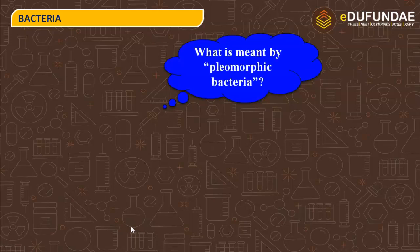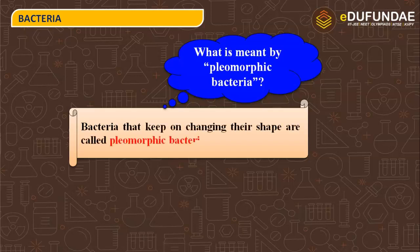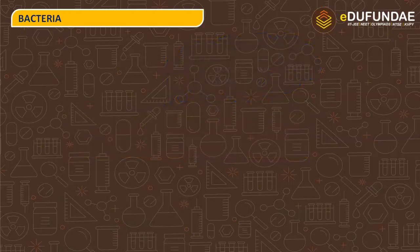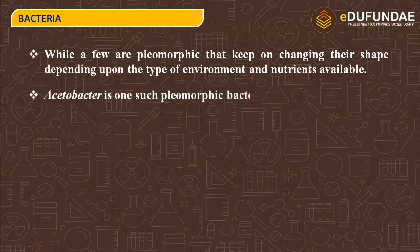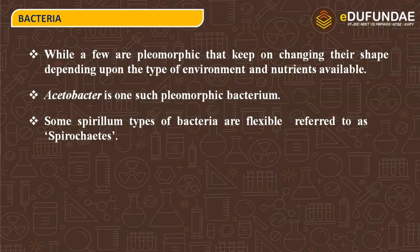The question arises: what is meant by pleomorphic bacteria? Most bacteria have a fixed shape, but some bacteria have the ability to change their shape. Bacteria that keep changing their shape depending on the type of environment and nutrients available are called pleomorphic bacteria. Acetobacter is one such pleomorphic bacterium — it keeps changing its shape to sustain in different environments.